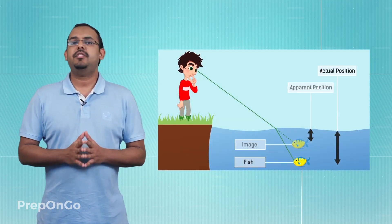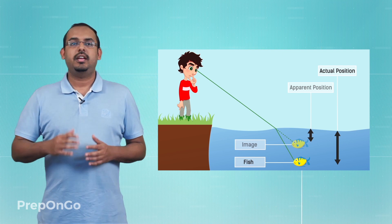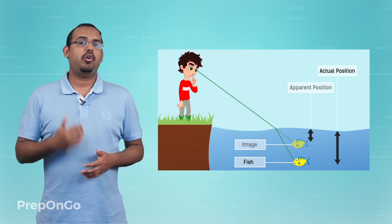Hello everyone. In our last lecture we studied about the concept of refraction of light. We saw what refraction of light is in brief, and we saw that some phenomena can be explained on the basis of refraction of light. In this lecture, we'll study about one such phenomenon and go in detail about how refraction of light is actually taking place in it.